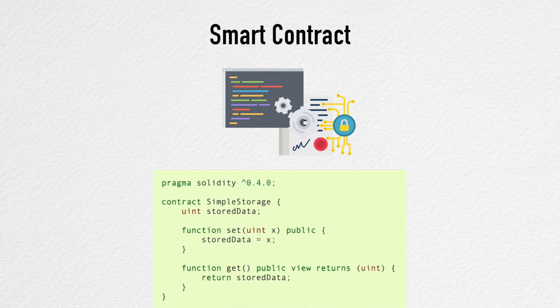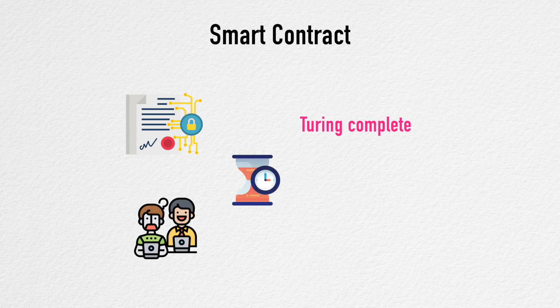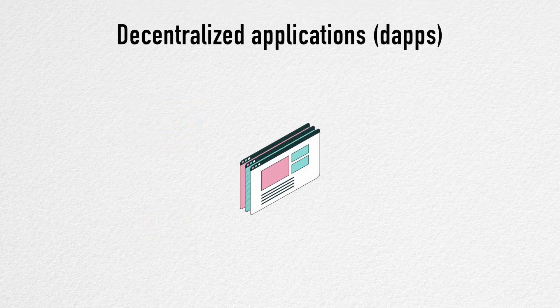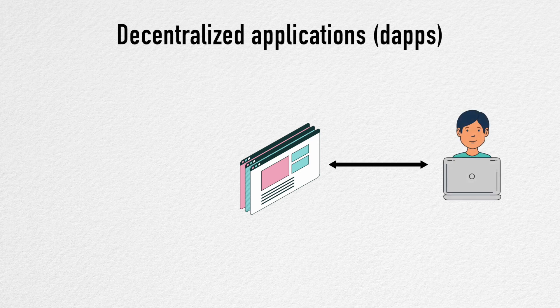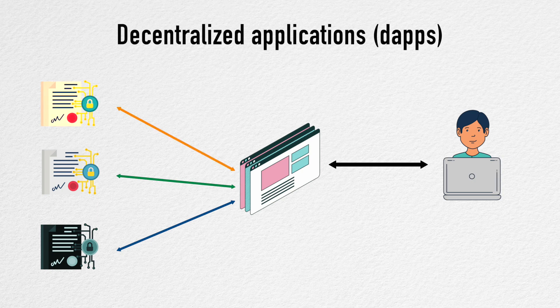Here is an example of what a smart contract looks like for basic data storage. The smart contracts on Ethereum are Turing complete, which means they are able to compute just about anything given enough resources. DApps, short for decentralized applications, provide the visual interface through which users can access functionality from different smart contracts on the blockchain. These are like the mobile or web apps we use today, except it's very hard to take down a DApp.